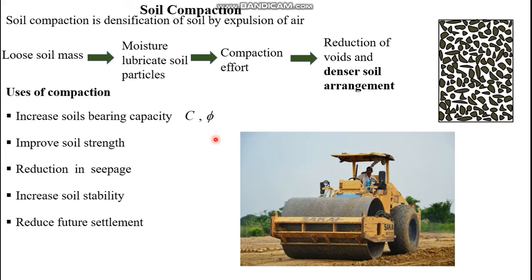Welcome back to this channel. This is the third video on subgrade soils and today's topic is soil compaction. Soil compaction is the densification of soil by expulsion of air. A soil mass is made up of solid particles, pore water, and pore air. In order to achieve a dense soil particle arrangement, you have to use a mechanical effort called compaction.